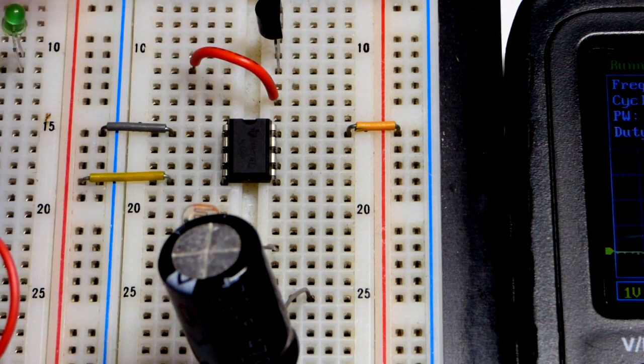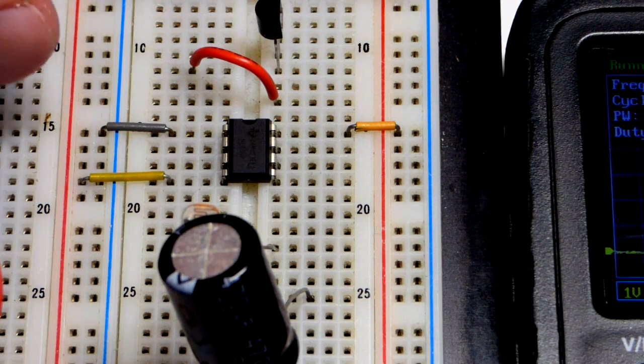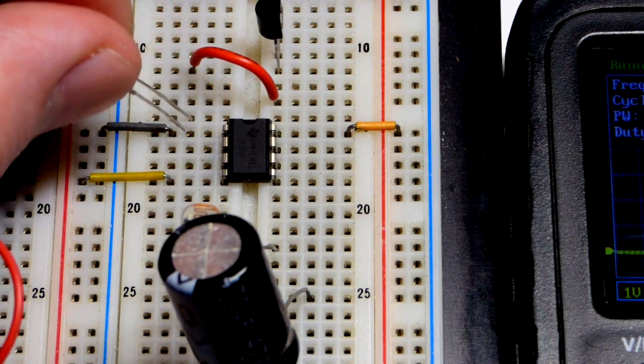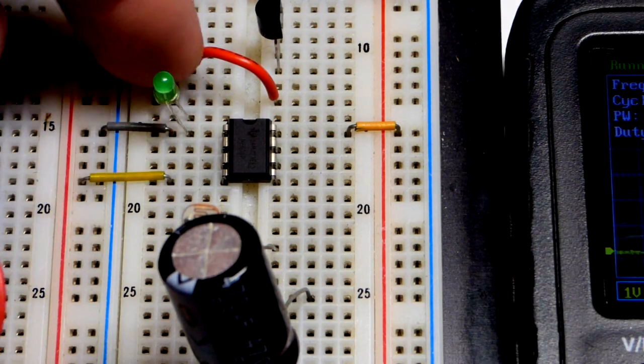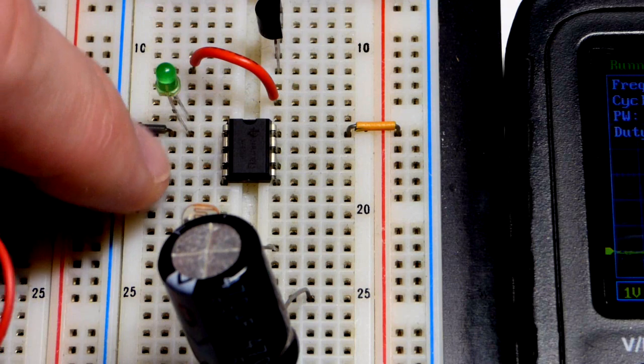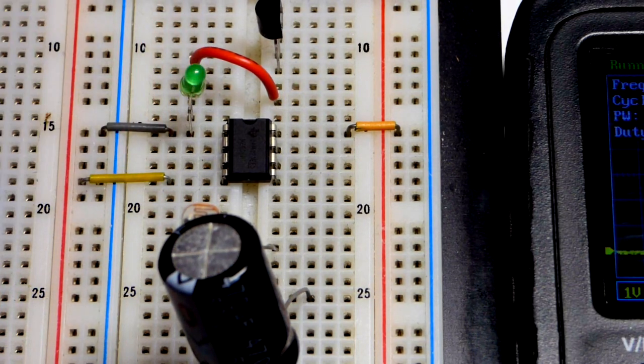We're going to wire this in astable mode so that the output keeps going high and low, and we'll light an LED. I'll plug that in right now. Put the short lead, the cathode, to that jumper going to the negative rail. Long lead, the anode, up one row right there. So when the output's high, the LED will light up.